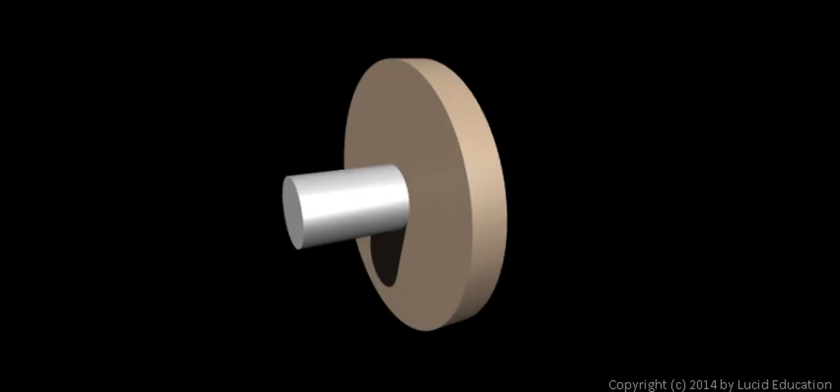Now we will discuss a simple machine known as the wheel and axle, and here's a picture of one. The wheel and axle consists of two cylinders fastened together, and the large cylinder is called the wheel. Even if it isn't used as a wheel for rolling, it's still called the wheel, and the small cylinder is